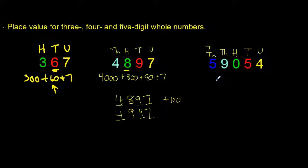So if I'm going to partition that, I'm going to start with 50,000 plus 9,000.